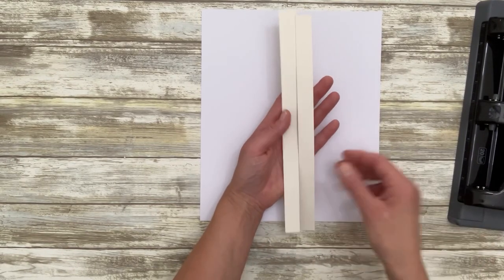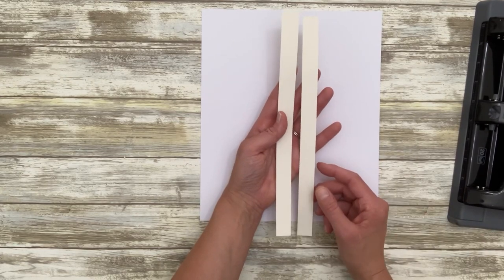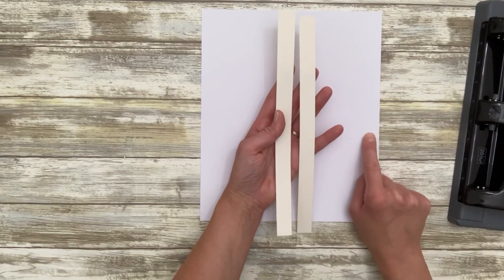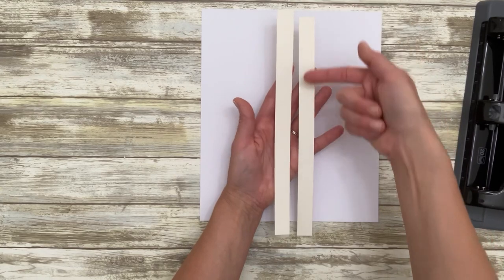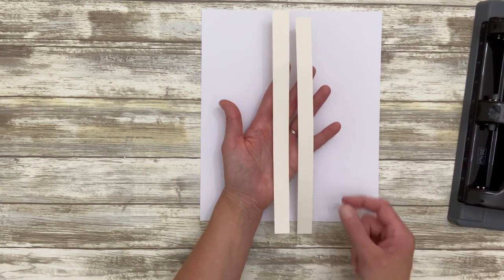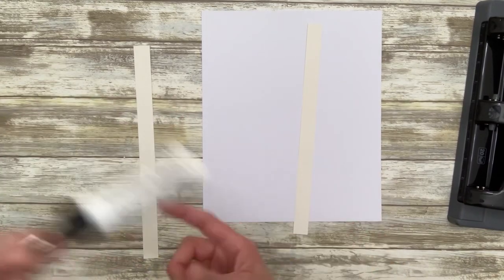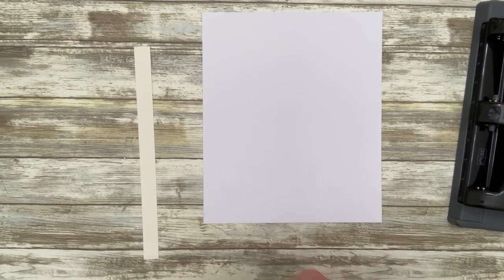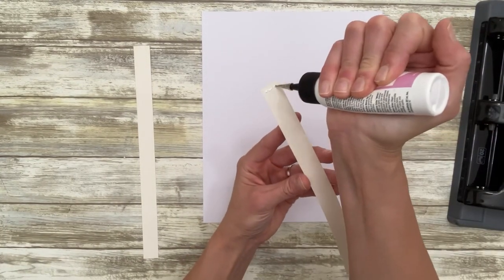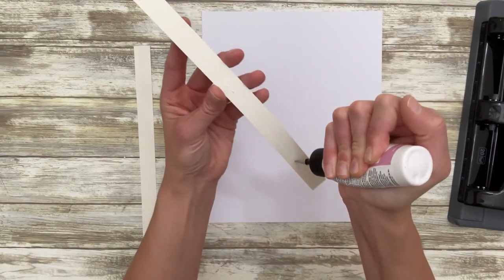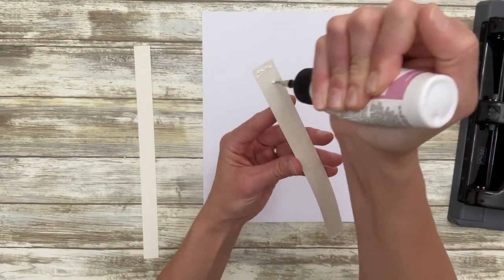Then from my base cardstock, whatever I would typically use in my scrapbook albums for interactive elements and pages, we are going to need two strips per base page. They're going to be the same length, 11 inches, and they're going to be three quarters of an inch wide. To prepare one page, we are going to simply adhere these strips to our page.